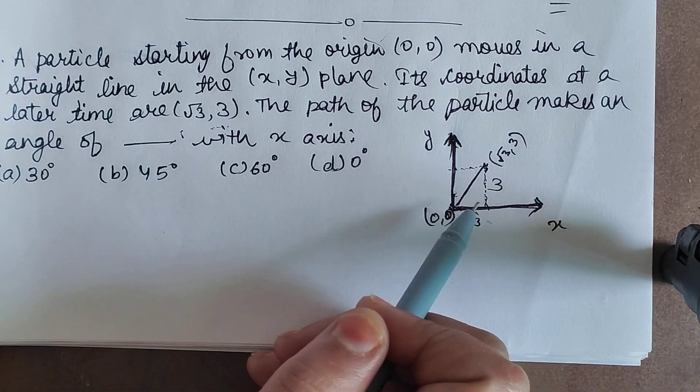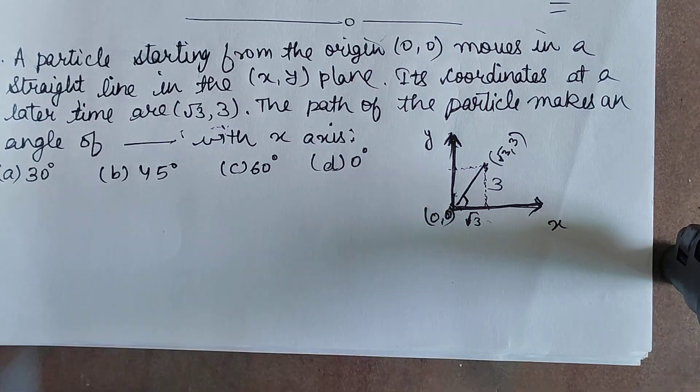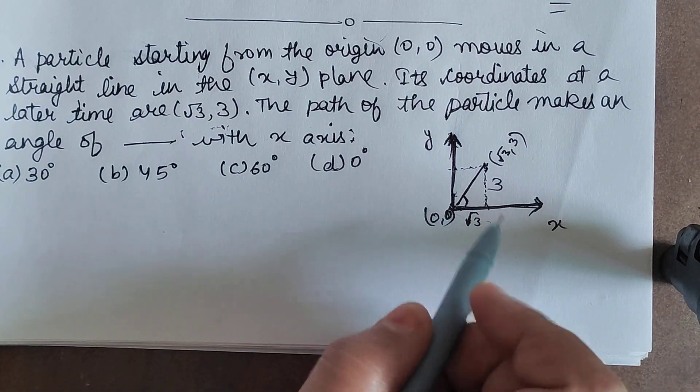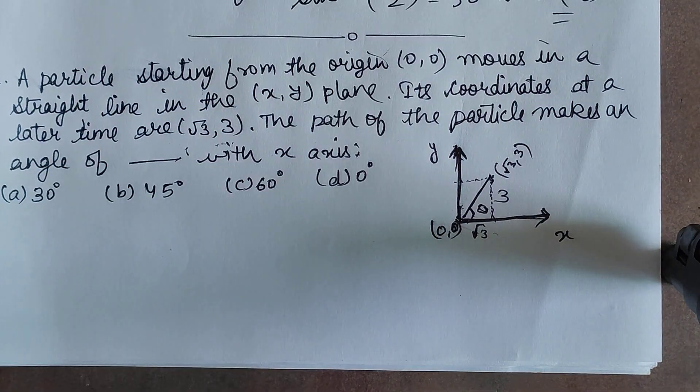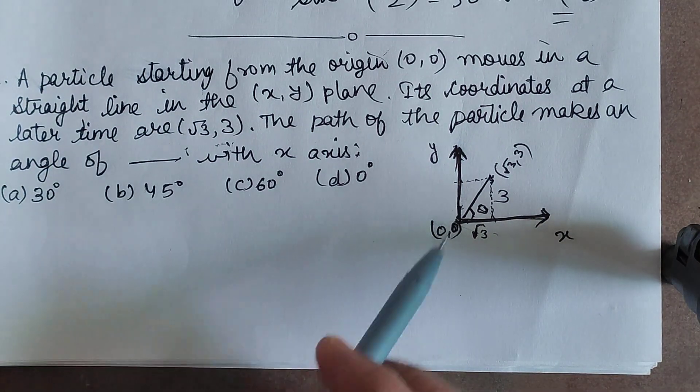Now we have to find this angle theta which is being made with the x-axis, direction of x-axis. So this is theta we will find out. So easily you can see here a right triangle.